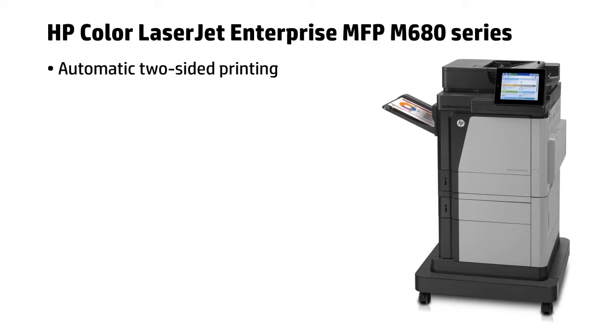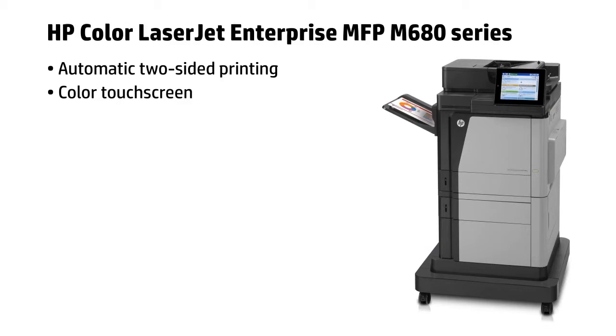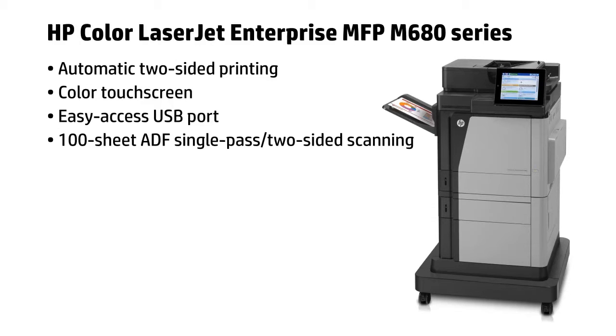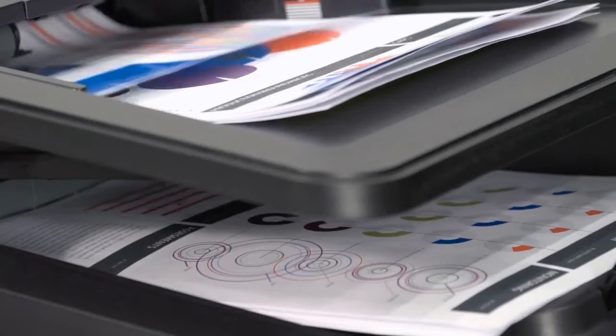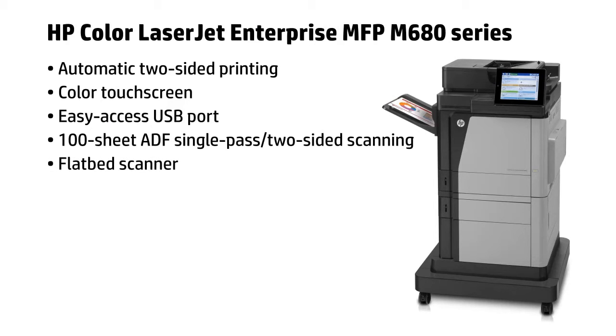You'll also get automatic two-sided printing, an 8-inch or 20.3-centimeter color touchscreen, an easy-access USB port for walk-up printing, a 100-sheet automatic document feeder, or ADF, with single-pass two-sided scanning, and a flatbed scanner.